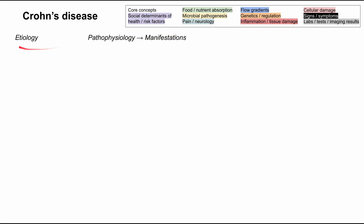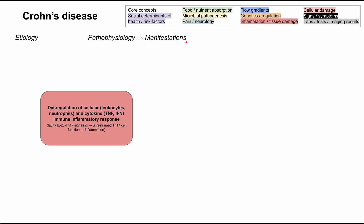I'll be starting with the etiology on the left, and then the rest of the slide will be pathophysiology to manifestations. The main central pathophysiology mechanism for Crohn's disease is dysregulation of cellular and cytokine immune inflammatory response. The cellular response includes leukocytes and neutrophils, and the cytokine response includes TNF and interferon — that's tumor necrosis factor and IFN.